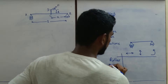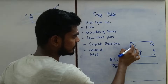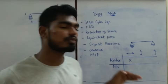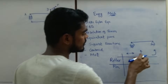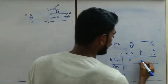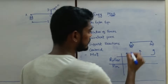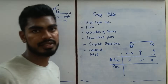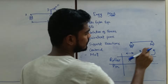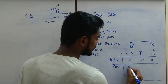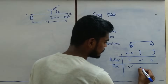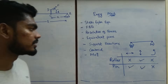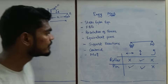For a roller: it can move in the horizontal direction, so there is no restriction and no reaction in the horizontal direction. But it cannot move vertically, so there is a vertical reaction. It is also free to rotate, so there is no moment reaction. For a pin joint: it cannot move horizontally — there is a horizontal reaction. It cannot move vertically — there is a vertical reaction. But it is free to rotate, so there is no moment reaction. That is the basic concept behind the reactions of a roller and pin joint.